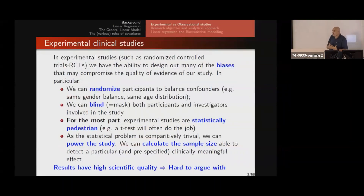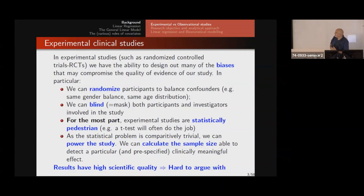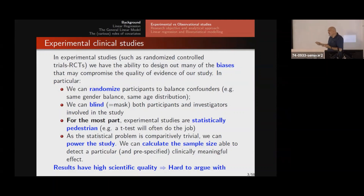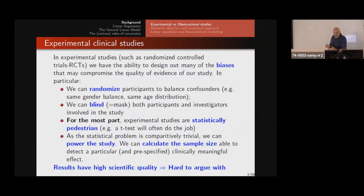The rationale for multivariable modelling is that in experimental studies, specifically randomised controlled trials, we have the ability to design out problems. By the design we use, we can take out many biases that work their way into clinical studies. We can randomise participants — this balances confounders. We can also do blinding, where patients don't know which treatment group they're in, or the investigators don't know. So we can take biases out of our study — real biases or perceived biases.